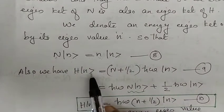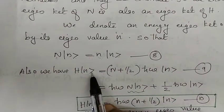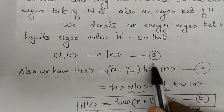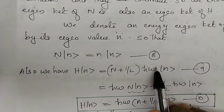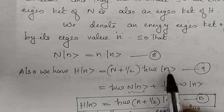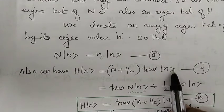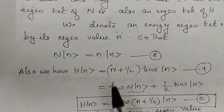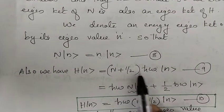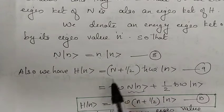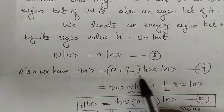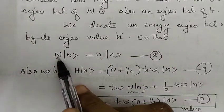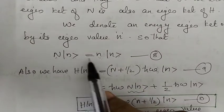We have already established that the Hamiltonian H equals N plus one half times h-bar omega. So the energy eigenvalue equation gives H ket n equal to n plus one half h-bar omega times ket n. This is the energy eigenvalue, and n into ket n is the eigen equation.